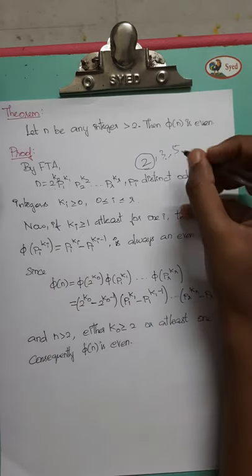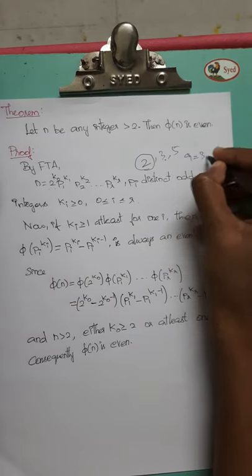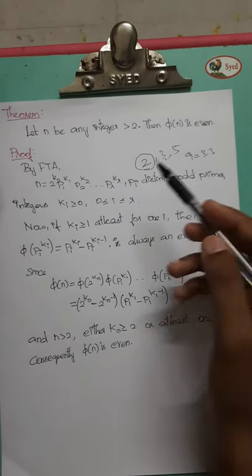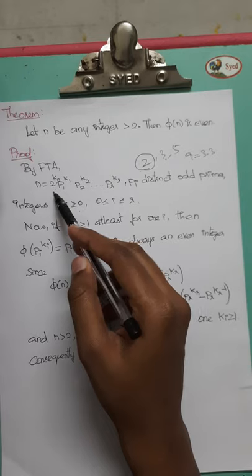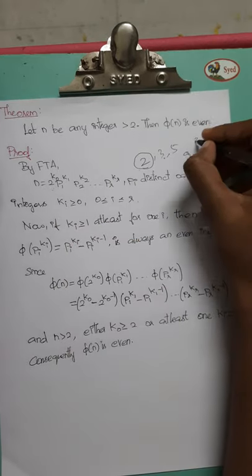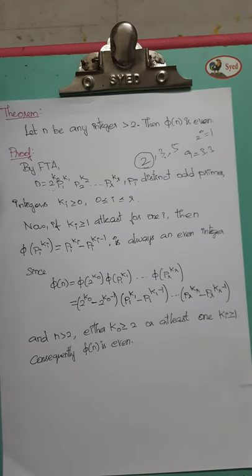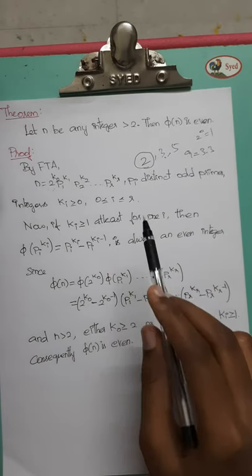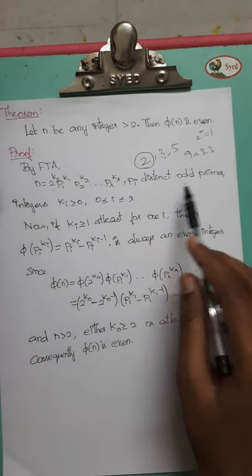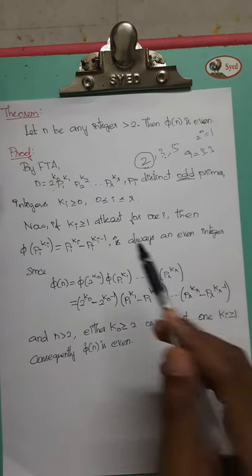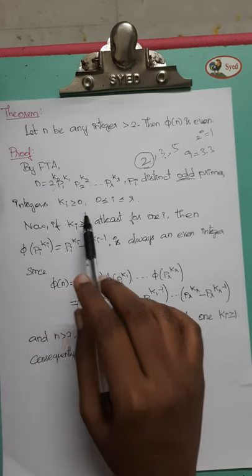For example, 9 is 3 times 3, that is 3 squared, so the power of 2 is k₀ equals 0. So we can express any number by pi. The pi has distinct odd primes, and k is greater than or equal to 0.